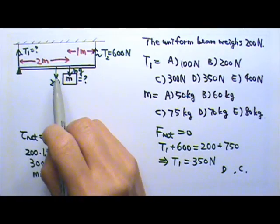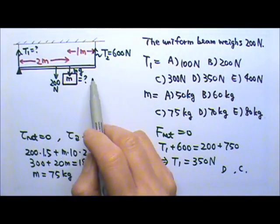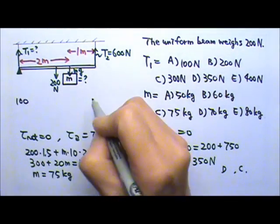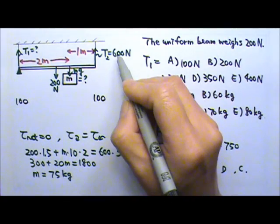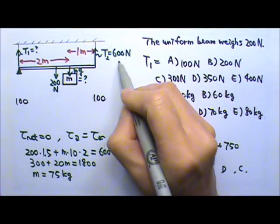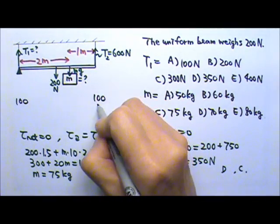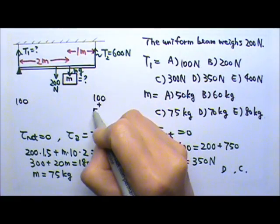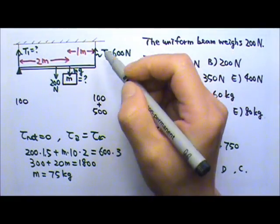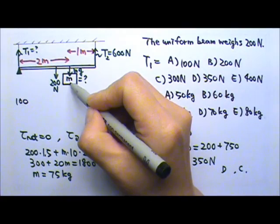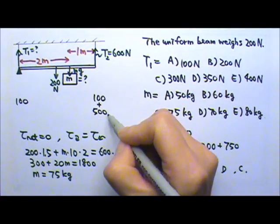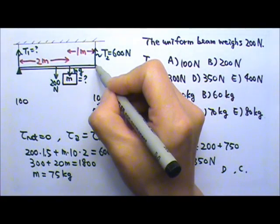For the uniform beam, it's symmetric. So each side supports 100N. That means the 600N on the right side must be 100 plus 500, which means the weight Mg has 500N being supported by this side of the beam.